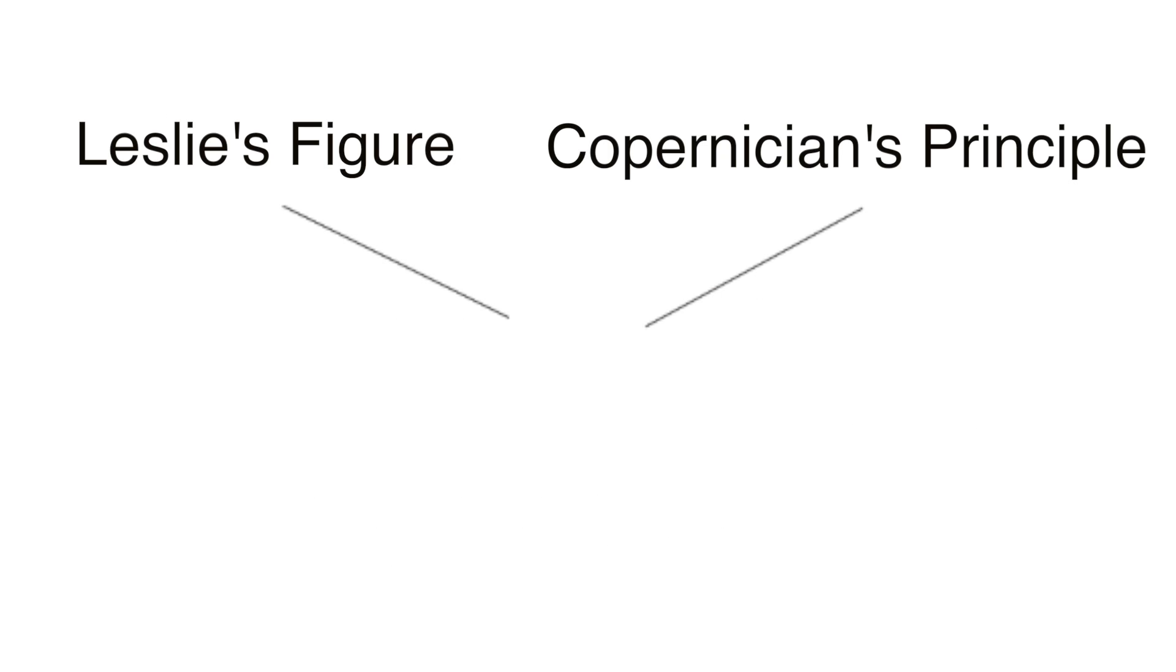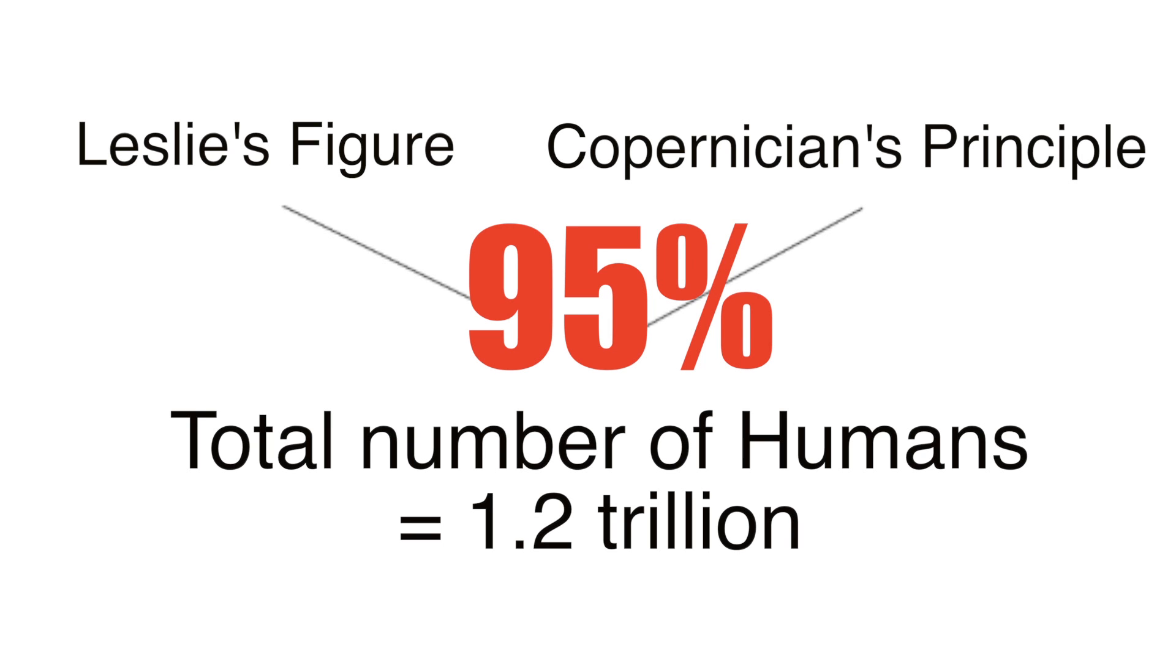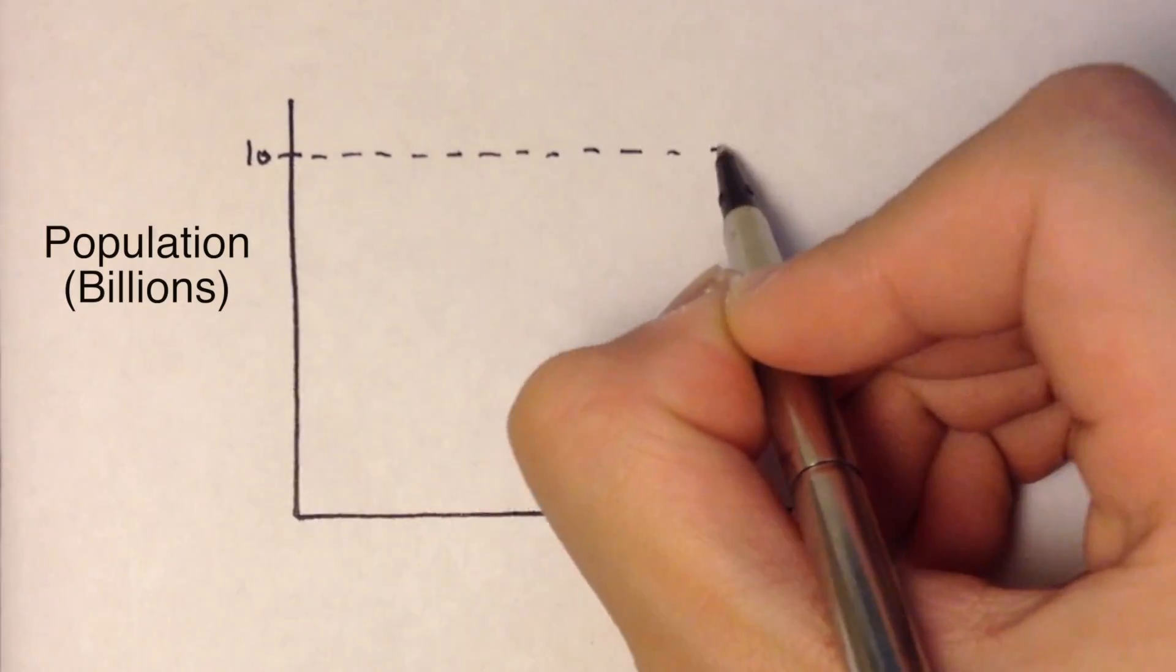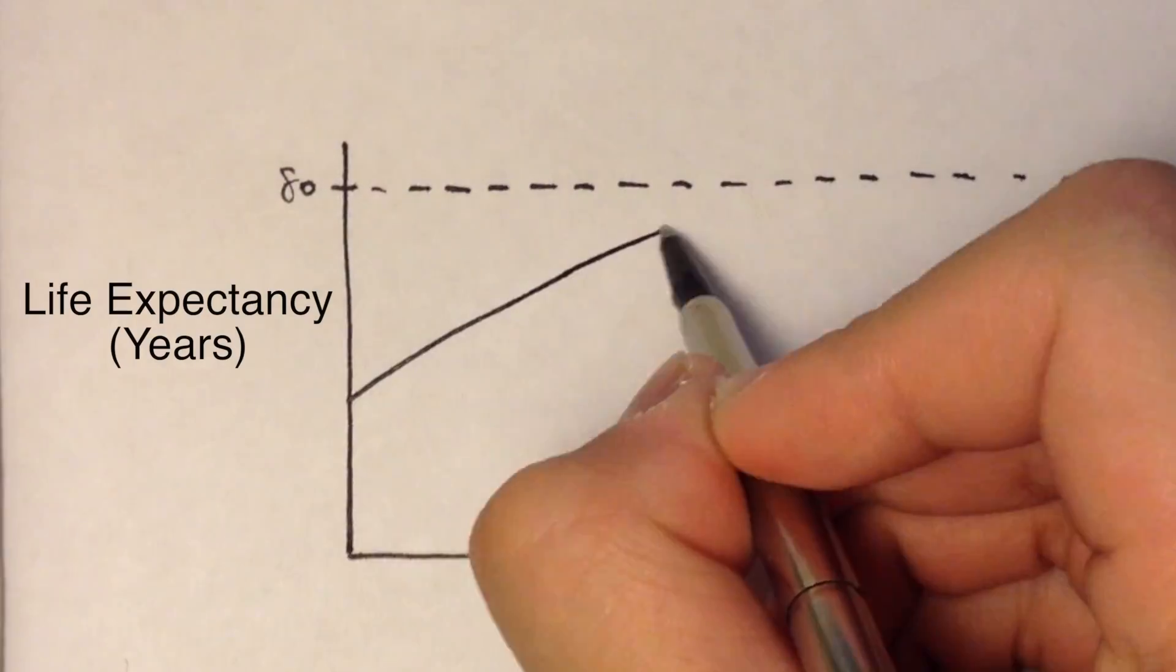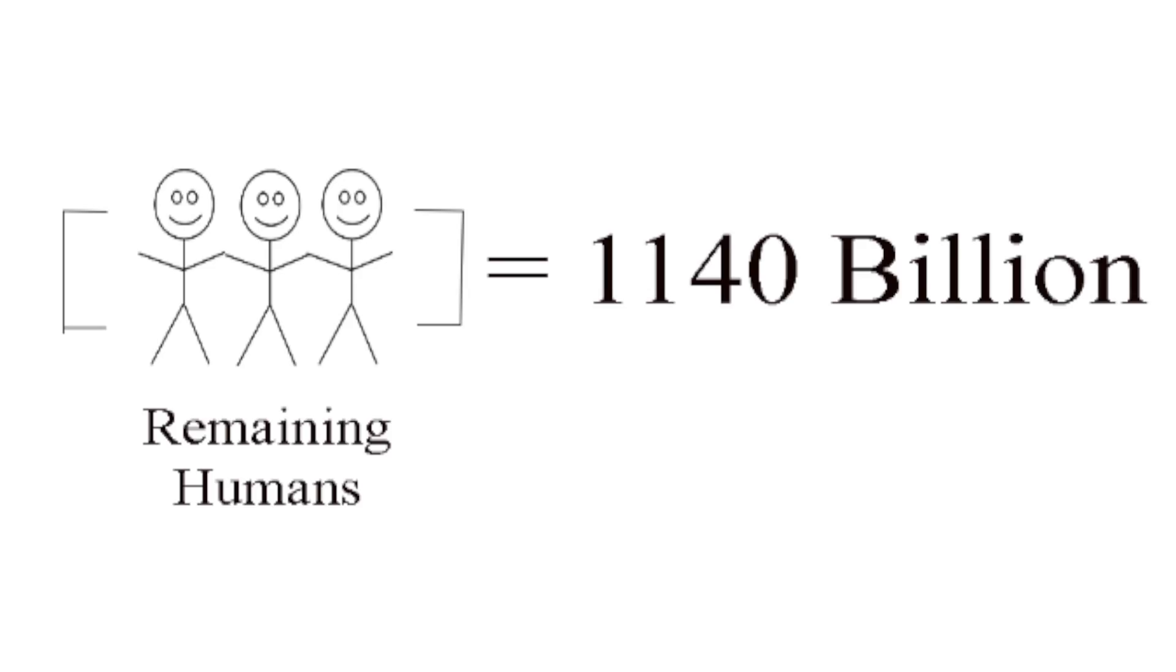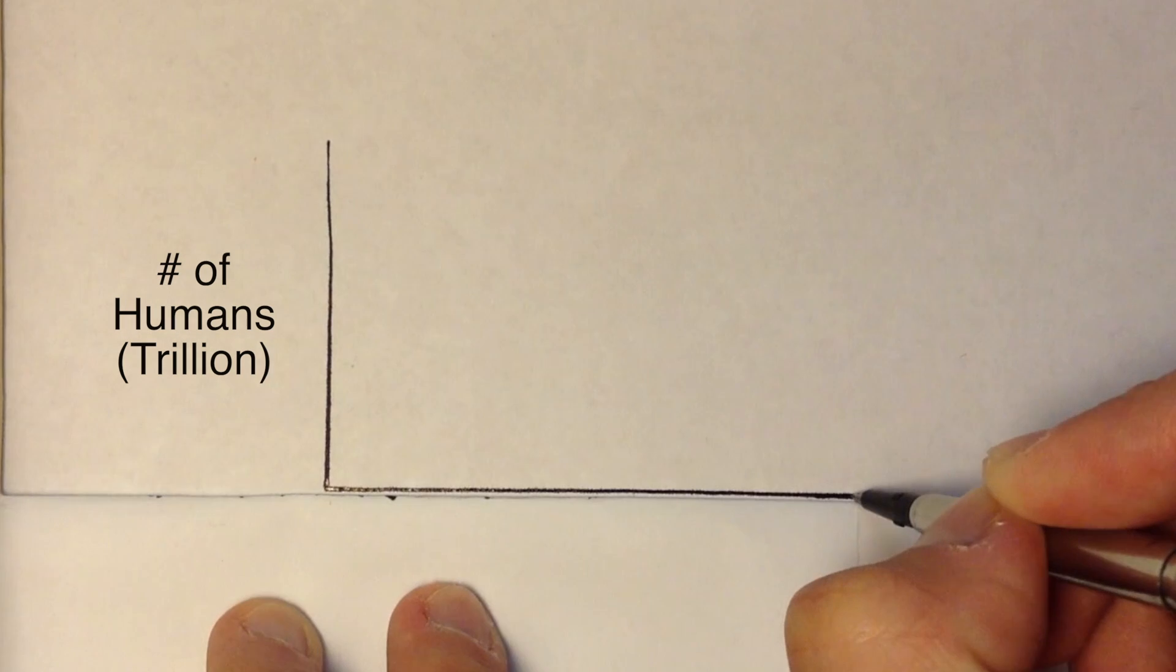Applying Leslie's figure and Copernican's principle, there's a 95% chance that the total number of humans that ever will live is around 1.2 trillion. Assuming that the world population stabilizes at 10 billion, with a life expectancy of 80 years, it can be estimated that the remaining 1,140 billion humans will be born in 9,120 years.